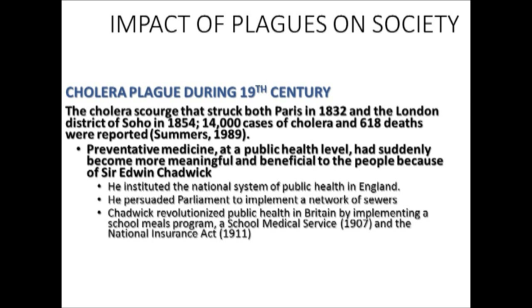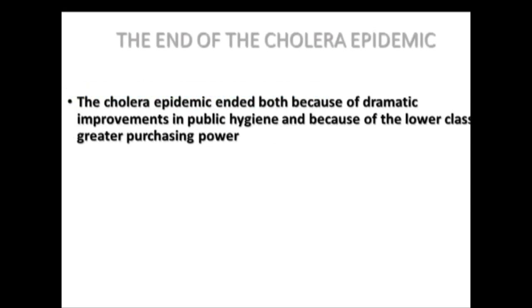The cholera epidemic was not contained specifically by medical interventions, since antibiotics had not yet been developed. It was public health measures taken by Edwin Chadwick in the late 19th and early 20th century that made the difference. Most notably, a national system of sewers and waterways was modernized in London, and the same technology moved to the United States. Historians conclude that the cholera epidemic ended because of dramatic improvement in public hygiene and the lower class's greater purchasing power giving them access to better food and living conditions.